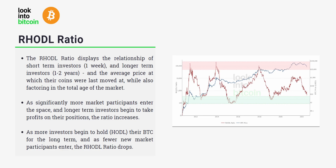As significantly more market participants enter the space and as longer-term investors begin to take profits, the ratio increases. Conversely, as fewer people enter and more people hold for longer, the RHODL ratio drops. Historically, strategic investors who accumulate especially in the green buy zone have been provided outsized returns in the following months and years.